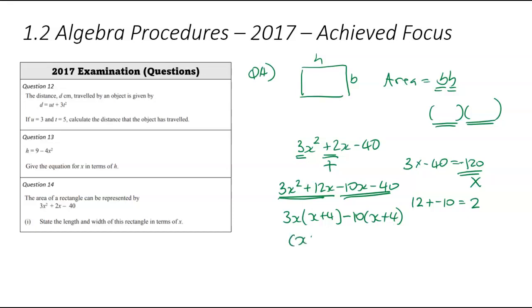So we're going to have x plus 4 as my first bracket. And the leftover bits, 3x and negative 10, is going to be the second bracket. So that's my factorization.